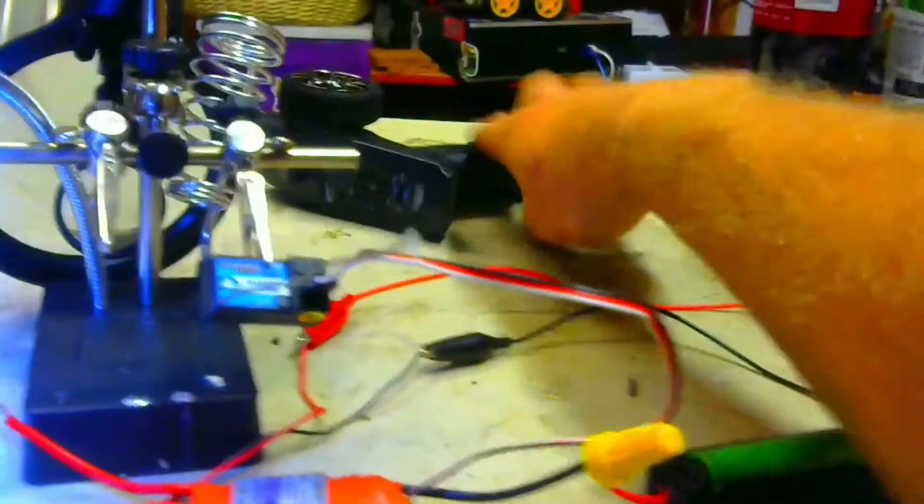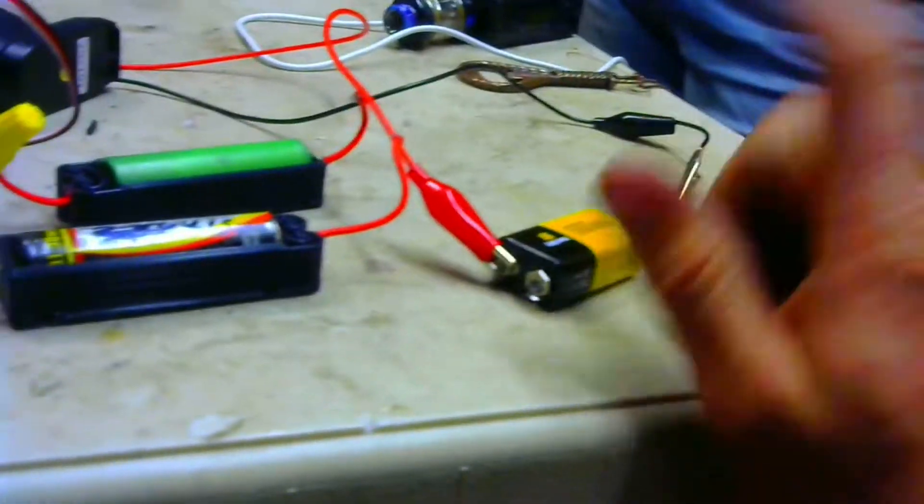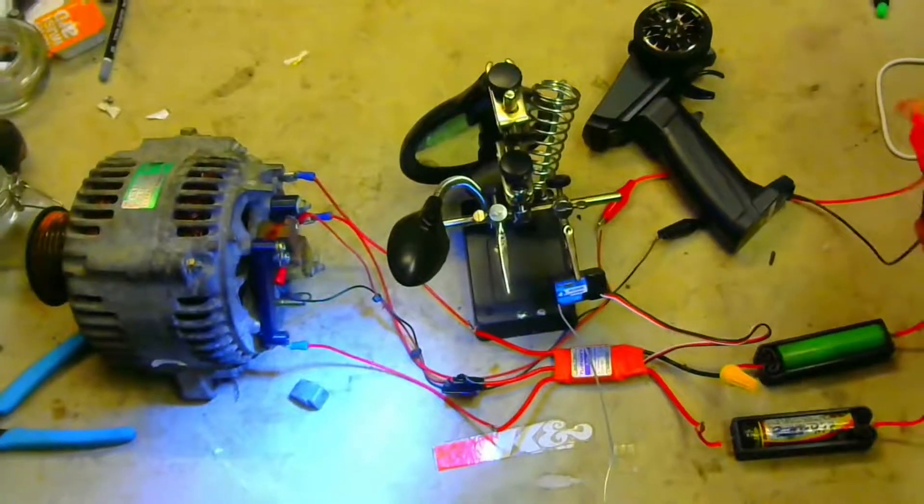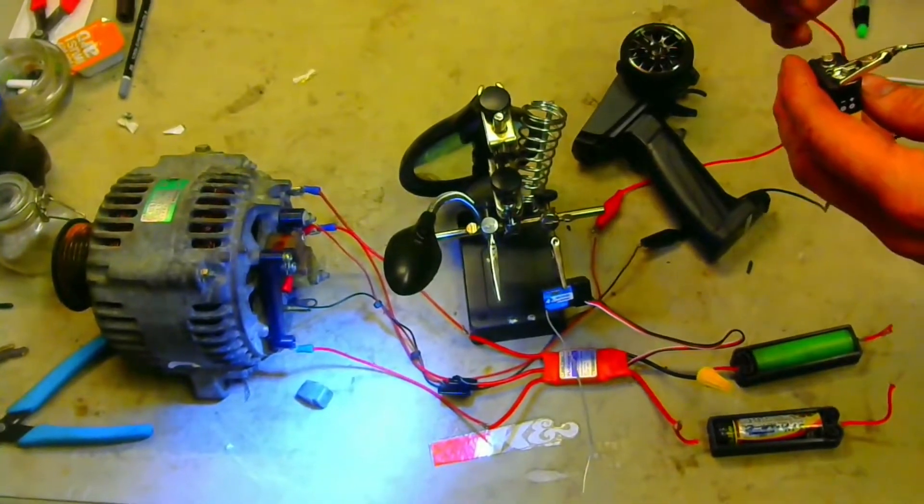Now, receiver remote, just a cheap one I got off eBay, turbo racing or something like that. And we got a 9-volt battery. Armature battery, engage,